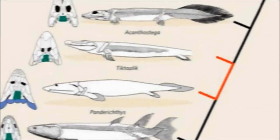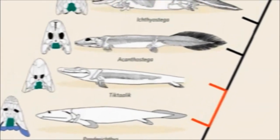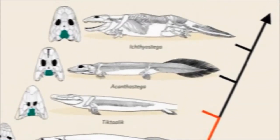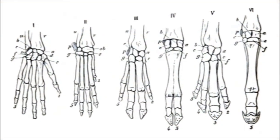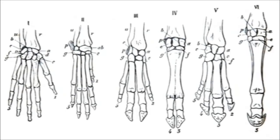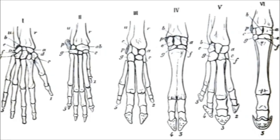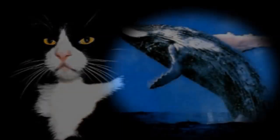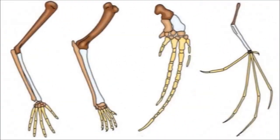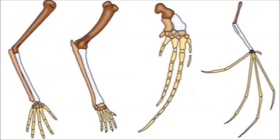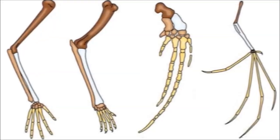A common theme within evolutionary biology is descent with modification, which is evidenced by observing anatomical similarities between species grouped in related taxonomic categories. For example, many mammals such as humans, cats, whales, and bats have closely related skeletal elements that make up their forelimbs, although these appendages have very different functions.